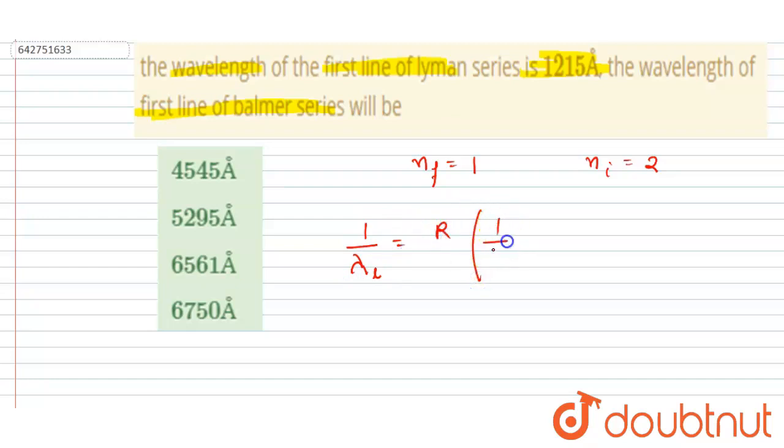R times (1/n_final² - 1/n_initial²). If you put the values of n_final and n_initial, then I will write R times (1 - 1/4). From here you will write that 1/λ_L equals 3/4 R.